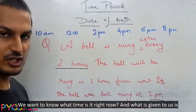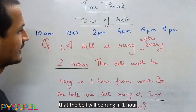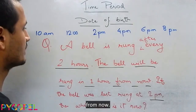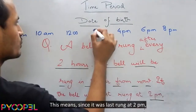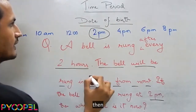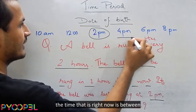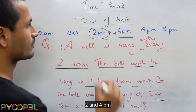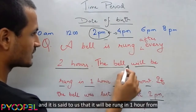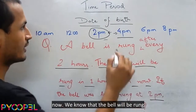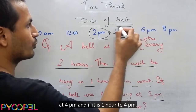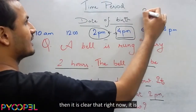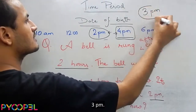Now we want to know what time it is right now. We are told the bell will be rung in 1 hour from now. Since it was last rung at 2 pm, the current time is between 2 and 4 pm. We know the bell will next ring at 4 pm, and if it is 1 hour away from 4 pm, then it is clear that right now it is 3 pm.